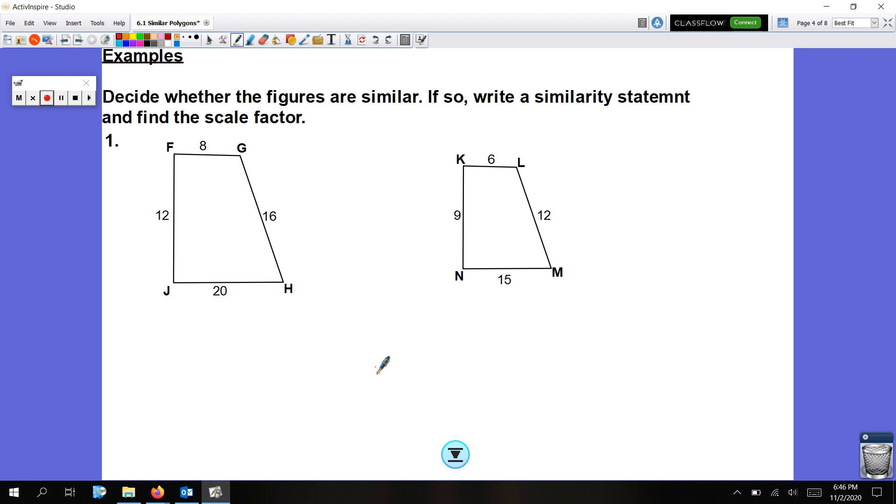So first, we're going to determine whether the figures are similar, and if so, we're going to write a similarity statement and find the scale factor. First, I'm going to note that angle H corresponds to angle M, angle L corresponds to angle Q, angle G corresponds to angle K, and angle F corresponds to J. What I mean is they're congruent. The angles remain the same measure. It's the length of the sides that change when an image is bigger or smaller than any other figure. So let's check the scale factor. First, we're going to do FG, that corresponds to KL, and then we plug in the numbers, we have 8 over 6, which is 4 over 3.